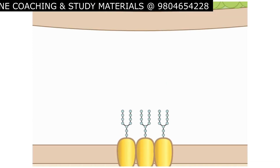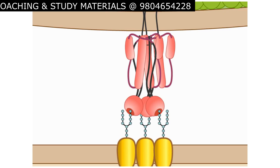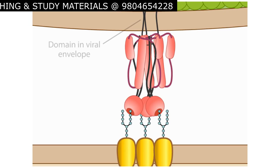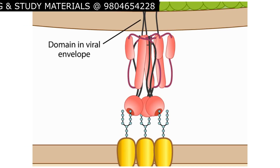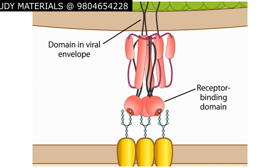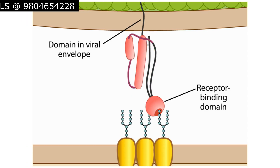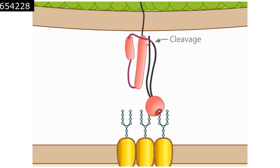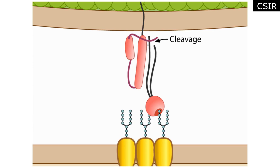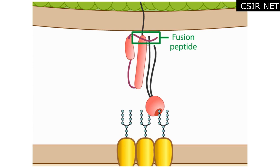The hemagglutinin complex consists of a trimer of subunits. Each subunit includes a domain that passes through the viral envelope and a domain that binds to the sialic acid receptor on the host cell. For an influenza virus to become infective, hemagglutinin must be cleaved. An enzyme released from the epithelial lining of the human respiratory tract performs this function, and the cleavage frees one end of the segment called a fusion peptide.